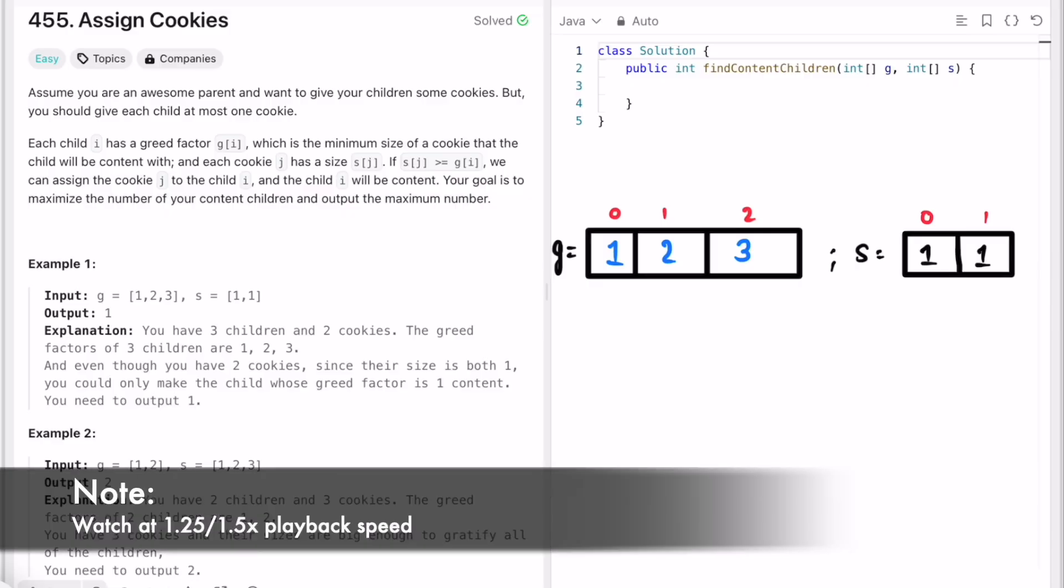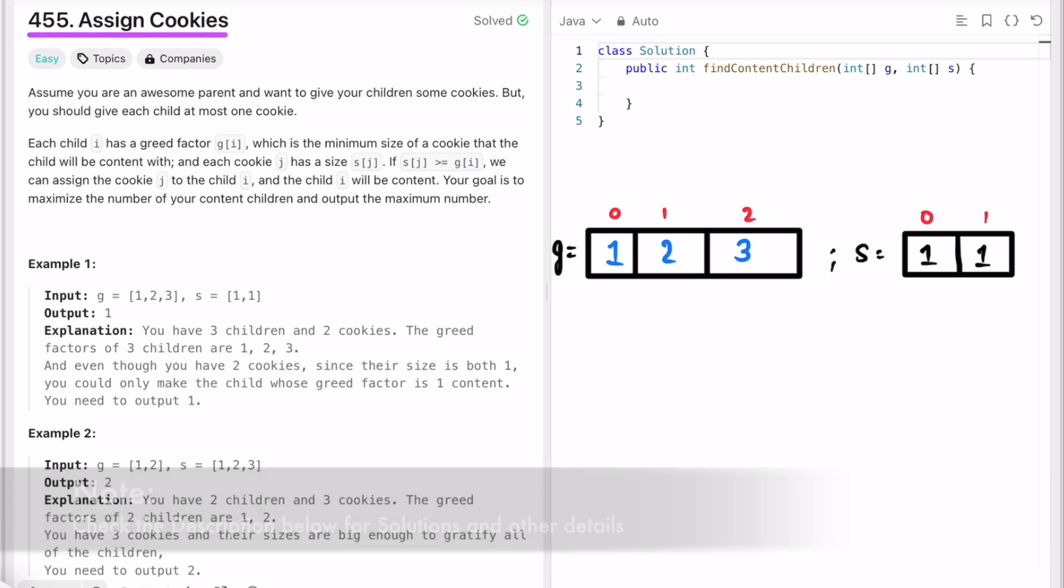Hey guys, welcome to a new video. In today's video we're going to look at a LeetCode problem called Assign Cookies. In this question we are given two integer arrays: g and s. g stands for the greed array and s stands for the cookies array. The greed array is the greed factor of every child.